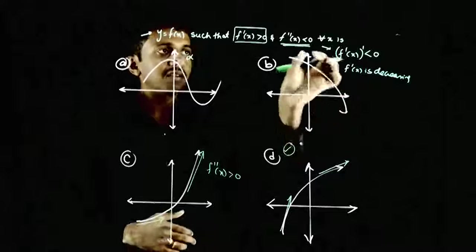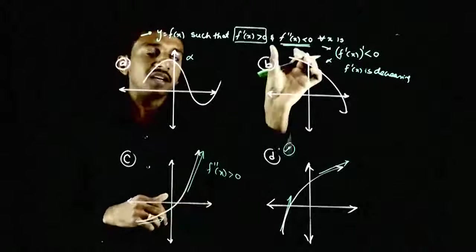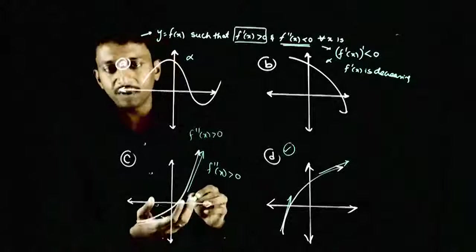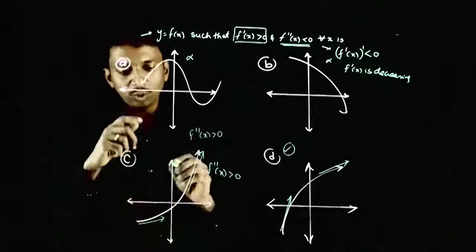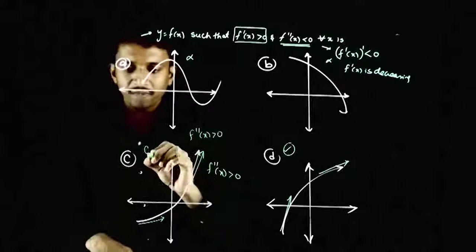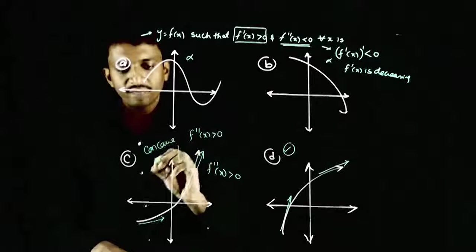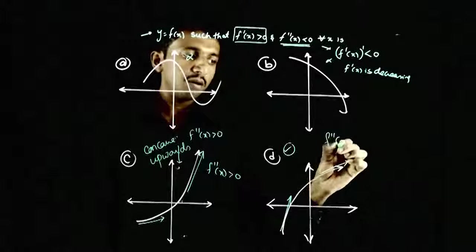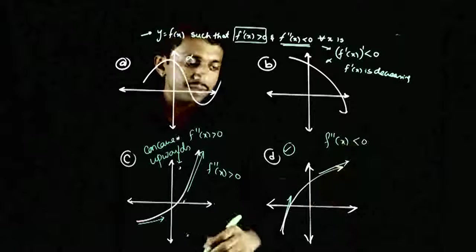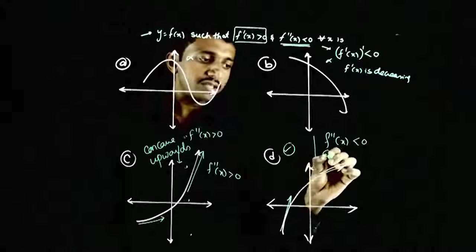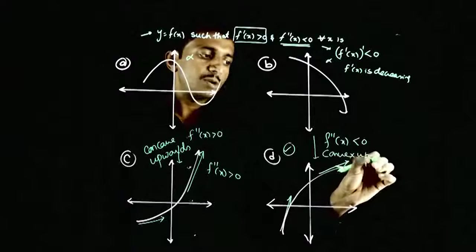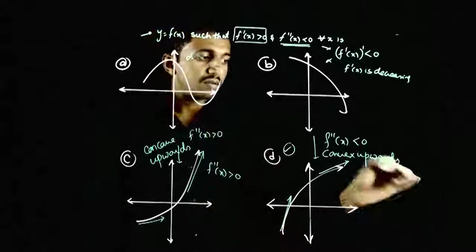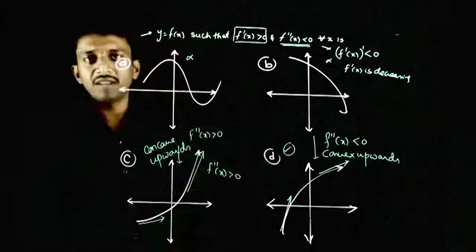Aap aisa bhi yaad kar sakte hai: agar f double dash of x greater than zero hai, toh the curve will be concave upwards — oopar se dekha toh concave lagega. If f double dash of x is less than zero, the curve will be convex upwards — oopar se dekha toh it will be convex. So option D will be the right option for this. Thank you.